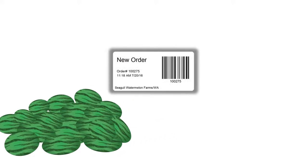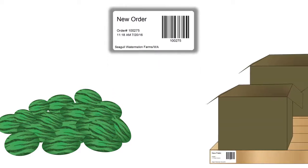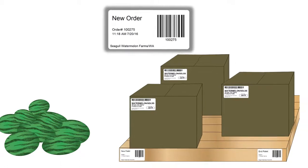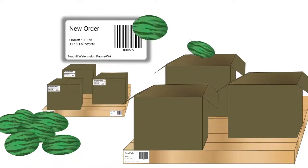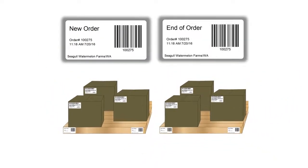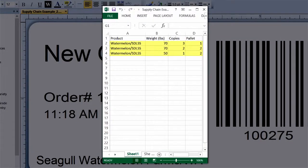Now for a look at the second real-world use case: Conditionally Printing Templates. Consider a scenario where a produce company receives orders for shipments of watermelons. The print job should begin with a label indicating a new order was received. The watermelons are packaged in labeled cartons and stored on pallets, so a label must be printed each time a new pallet starts and ends. Finally, each print job must end with a label marking the end of the order. All of these labels can be printed by using a single document with multiple templates that are conditionally printed.